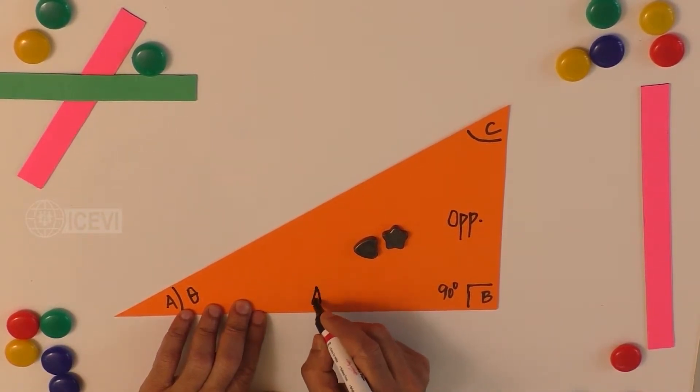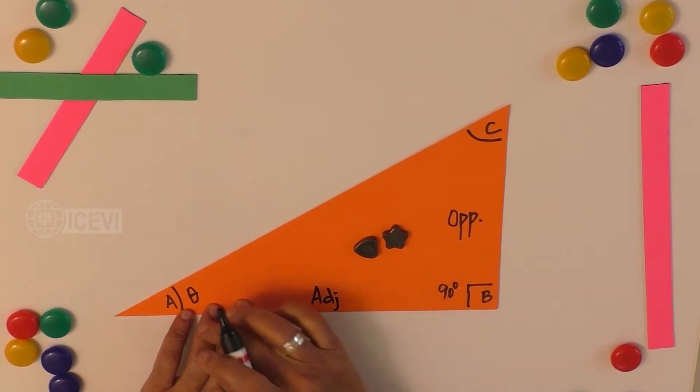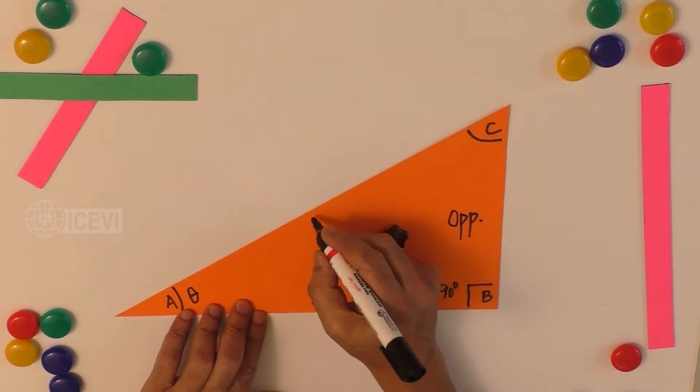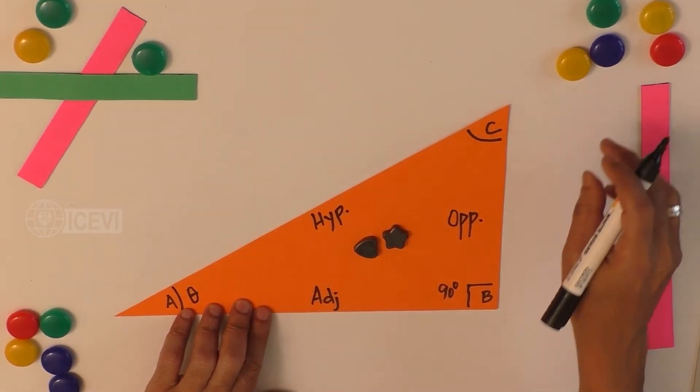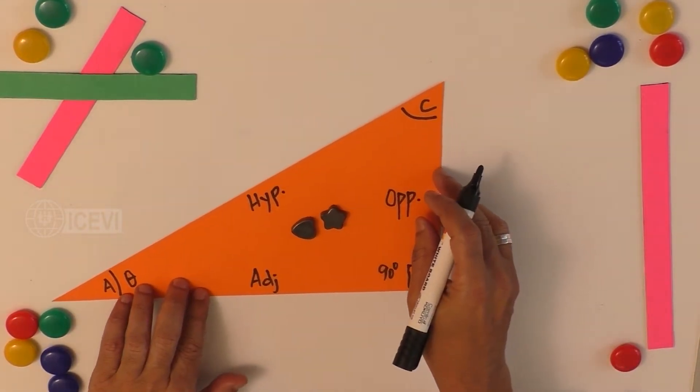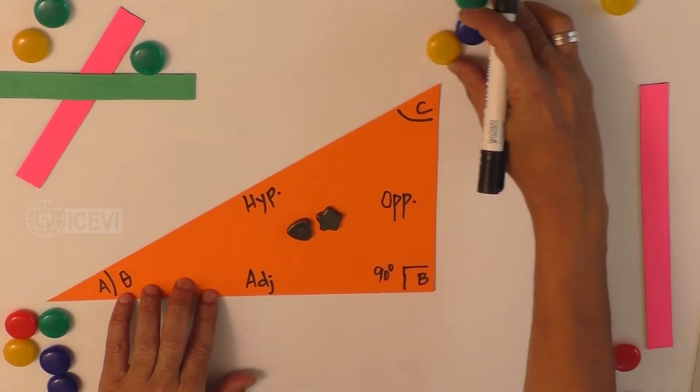is adjacent, and side AC is hypotenuse. Now, how we define the different trigonometric ratios: